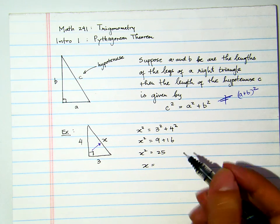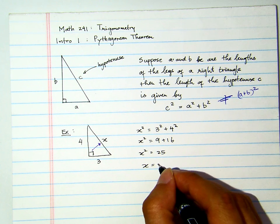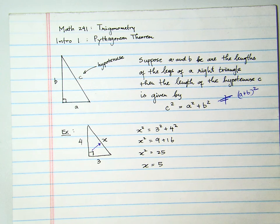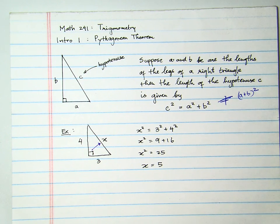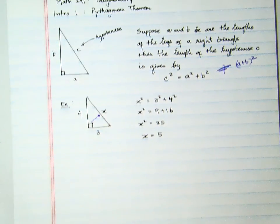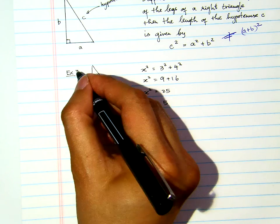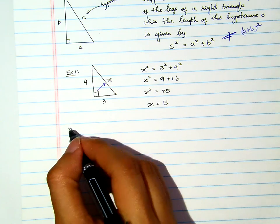X squared equals 9 plus 16. X squared equals 25. Therefore, X equals supposed to be plus minus 5, but because X is a length, then we just say X equals 5. That's the first example for Pythagorean theorem. Let's see another one, another example. Let's call that example 1 here. Let's see example 2.